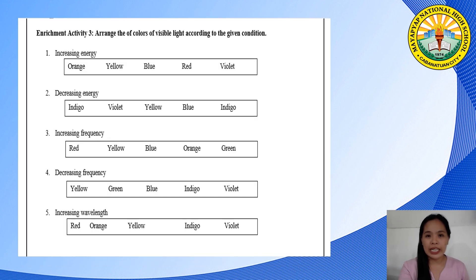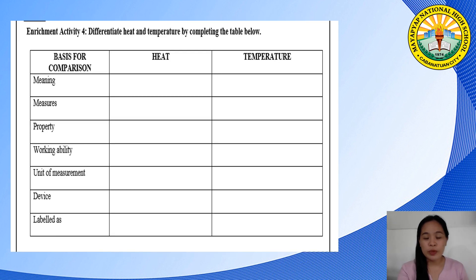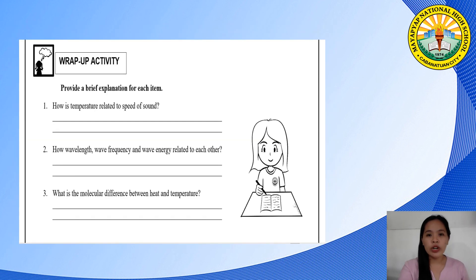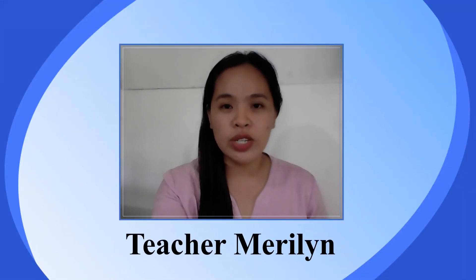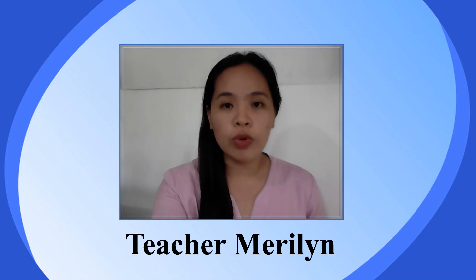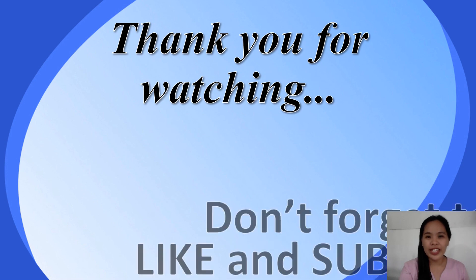For enrichment activity number three, arrange the colors of visible light presented in the box according to the given condition. For enrichment activity number four, identify the difference between heat and temperature — copy the table and write a brief answer according to the stated basis of comparison. For your wrap-up activity, provide a brief explanation to answer the following questions. I hope you learned something today. Feel free to contact your subject teacher through text or call, or post your questions in your official Facebook group or page. Thank you for watching. Don't forget to like and subscribe.